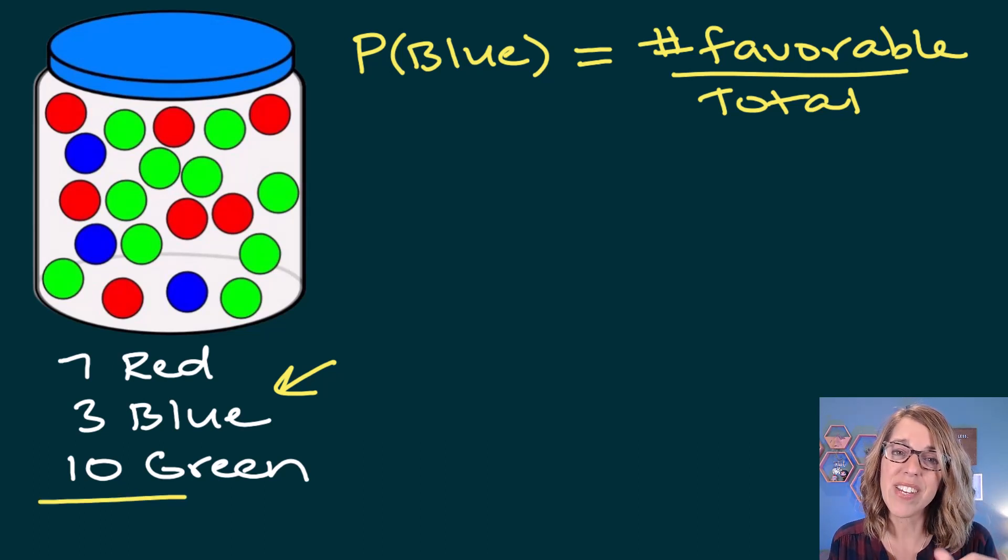Our total is the total number of marbles. If I add 7 plus 3 plus 10, that tells me that n, my total, is equal to 20.